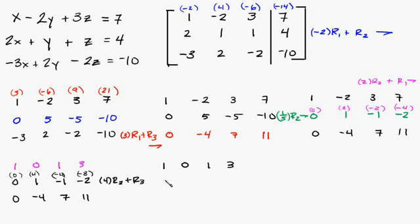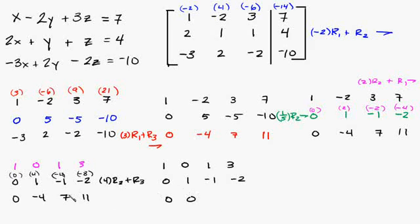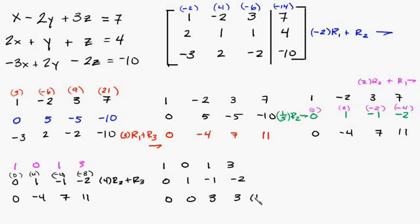We're going to copy these down: 0, 1, negative 1, negative 2. Then 0 plus 0 is 0, negative 4 plus 4 is 0, 7 plus negative 4 is positive 3. Now what we want to do is get a 1 over here. So what we can do is multiply row 3 by 1/3.